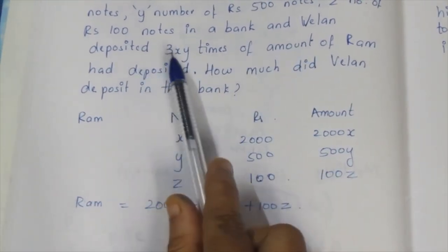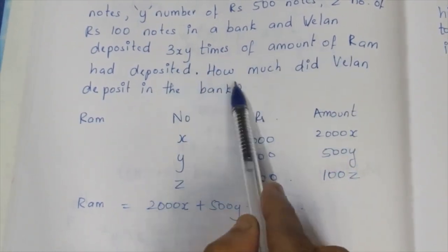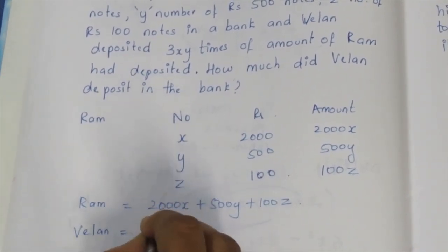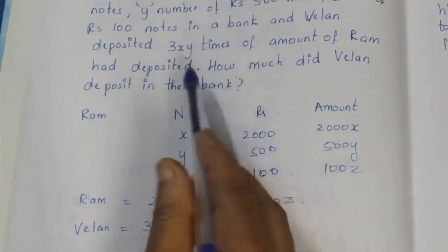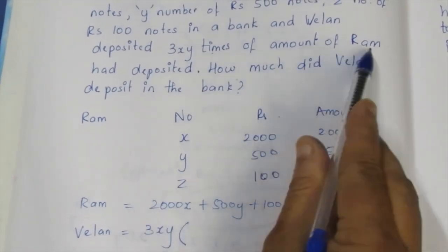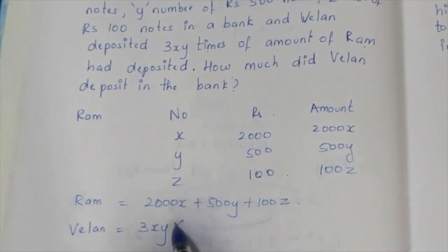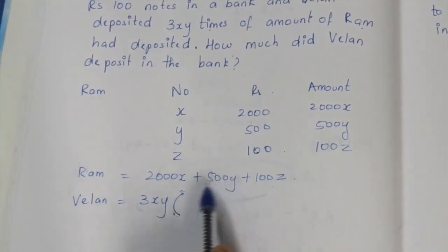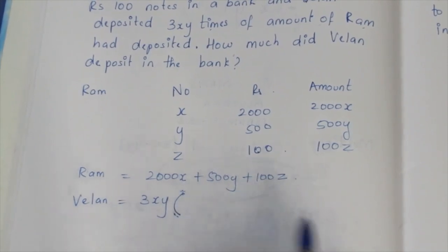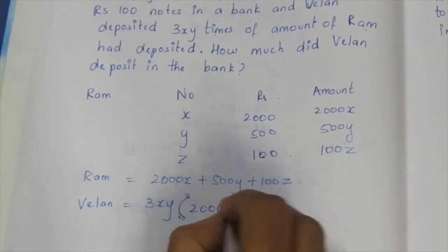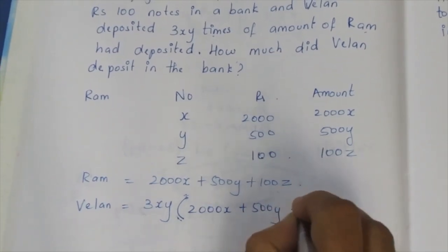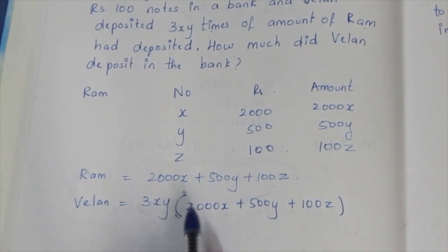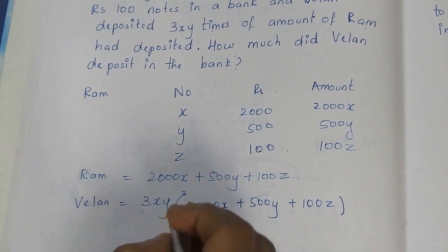Now, Valent deposited 3XY times the amount that Ram deposited. So Valent's deposit is 3XY multiplied by the quantity 2000X plus 500Y plus 100Z.